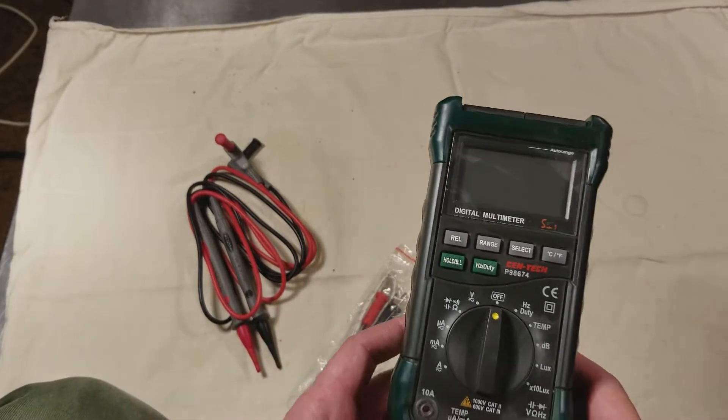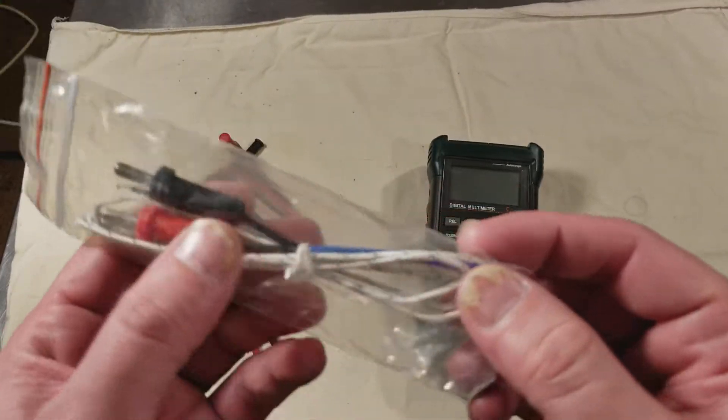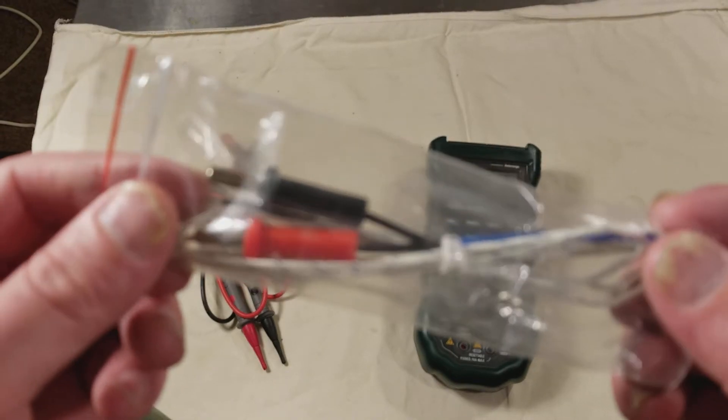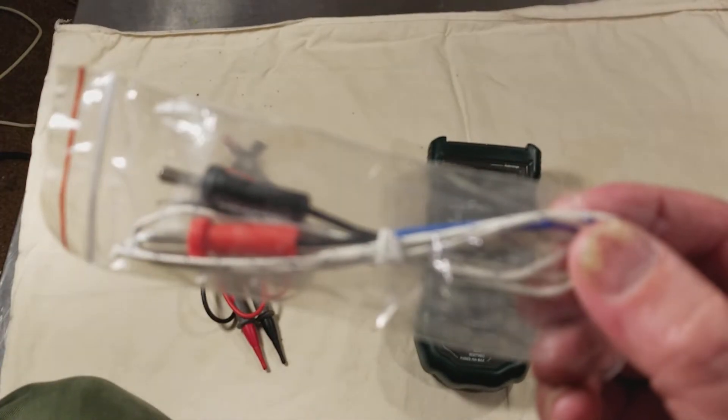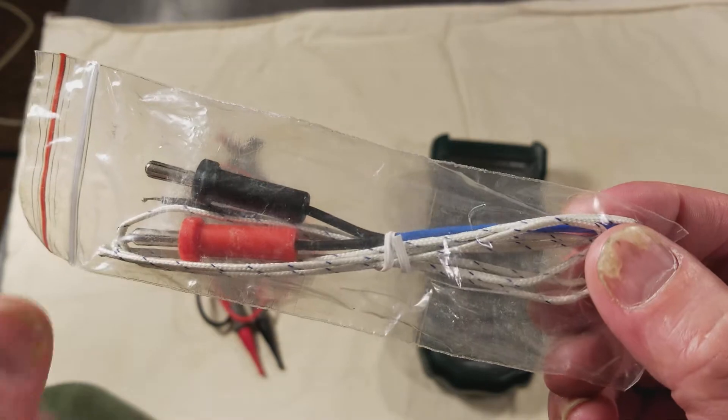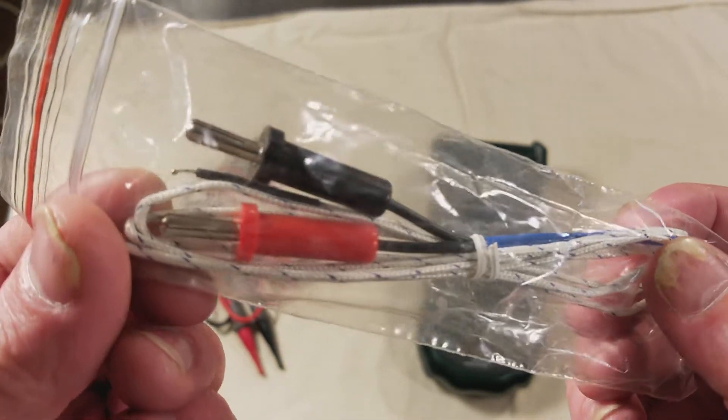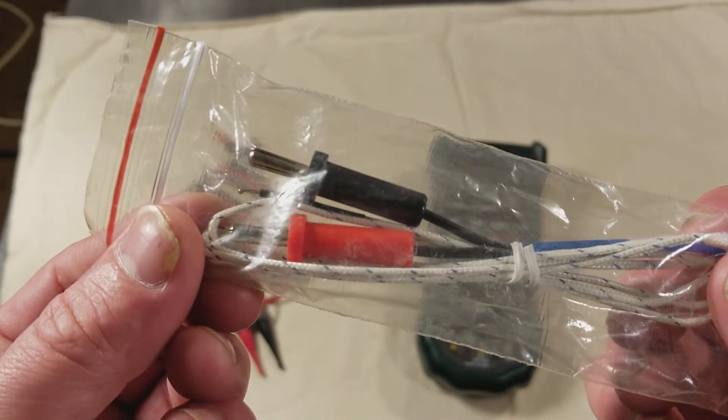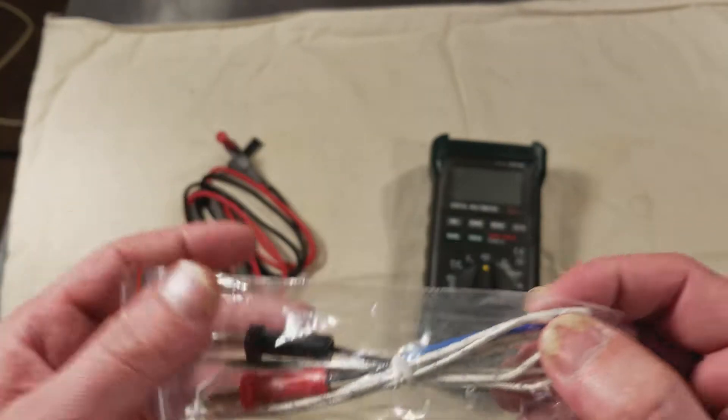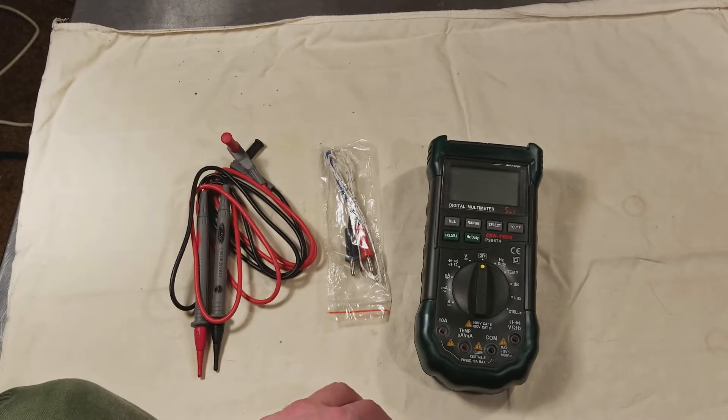It can also do external temperature measurements, and it comes with this little Type-K thermocouple. If we can get it to focus on it. There we go. And then there's the thermocouple itself, just that little bead on the end of the wire. And so it's a pretty nice unit.